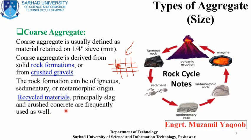Recycled materials are also important. Nowadays many researchers are working on this topic. When old structures are demolished, the old concrete is being used as recycled aggregates. Another important approach is using brick aggregates — recycling demolished bricks, cutting them to specific sizes and using them as coarse aggregate. This covers coarse aggregate.